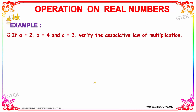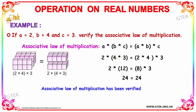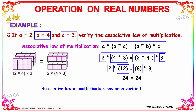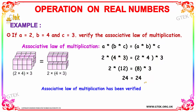Now let's verify the associative law of multiplication: (a × b) × c = a × (b × c), with a = 2, b = 4, c = 3. Left side: (2 × 4) × 3 = 8 × 3 = 24. Right side: 2 × (4 × 3) = 2 × 12 = 24. Both sides equal 24, so the associative law of multiplication has been verified.